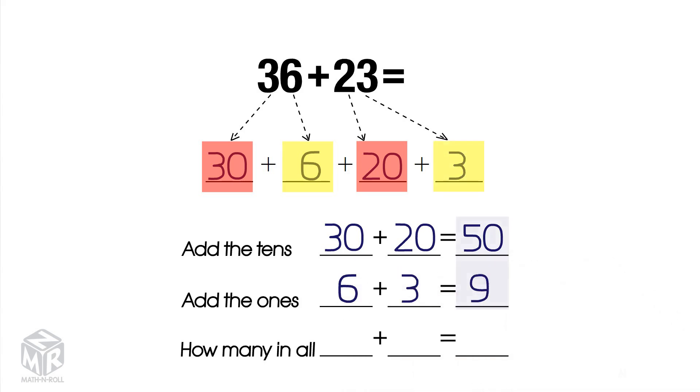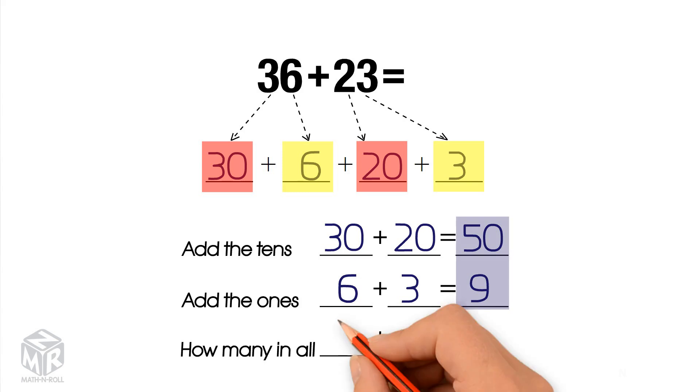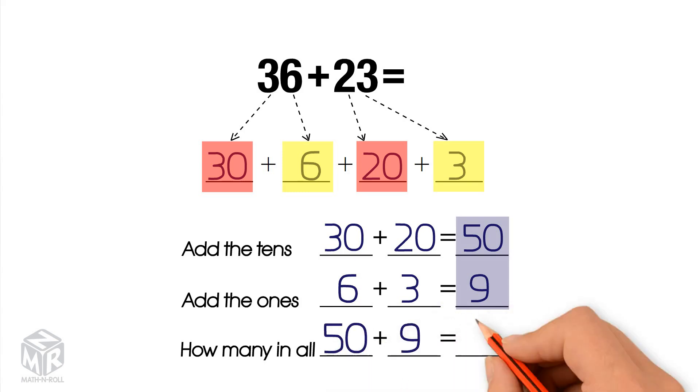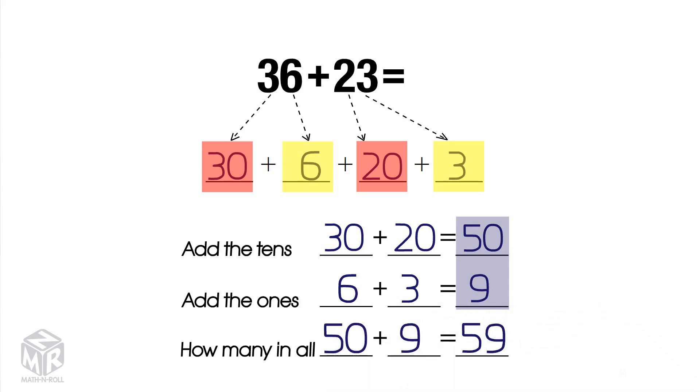Now we add them together: 50 plus 9 equals 59. So 36 plus 23 equals 59.